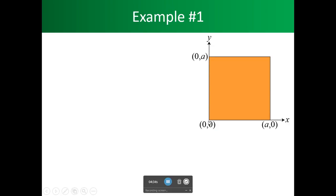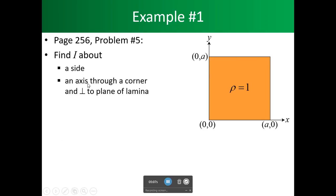So, let's do an example. We have this square here with a density of 1. We have this square box. It goes on the x-axis from 0 to A, and on the y-axis from 0 to A. And you will also find this in your book, Problem No. 5, on page 256. So, what we're interested in is finding the moment of inertia about a side, about an axis through a corner. These are our corners. This is our side.